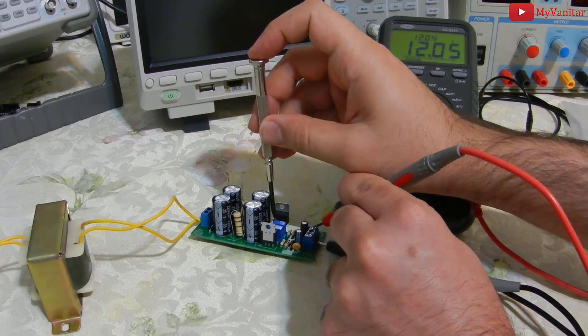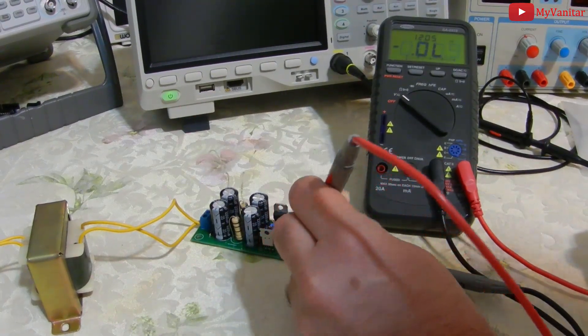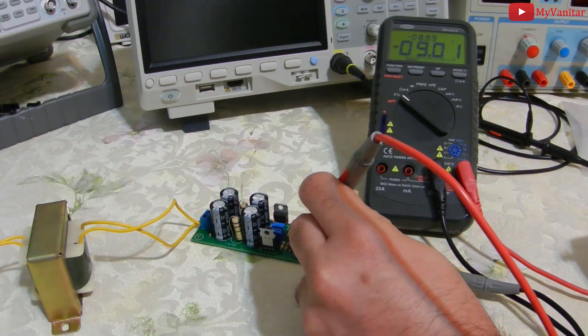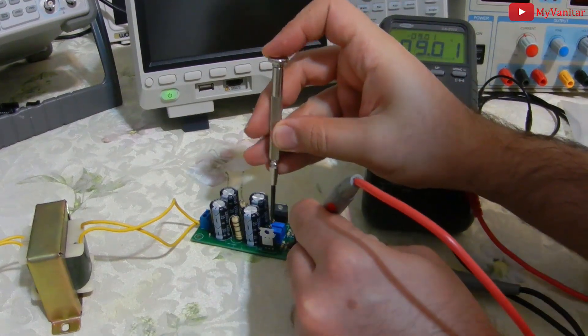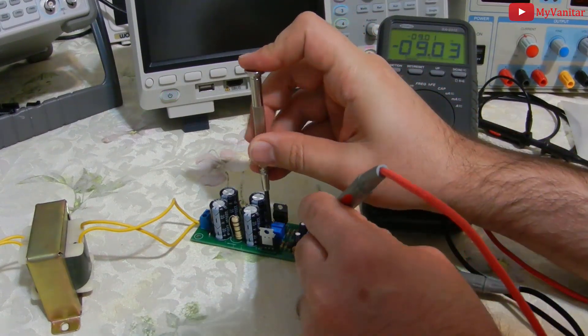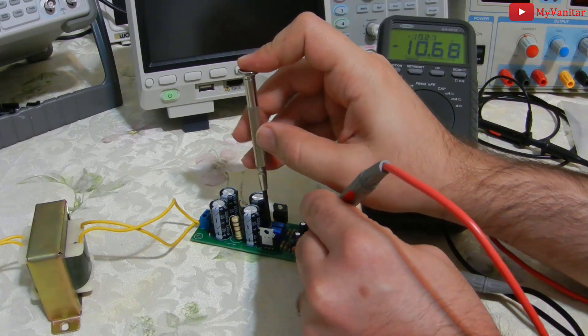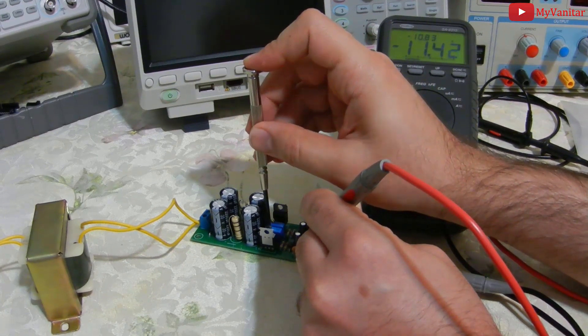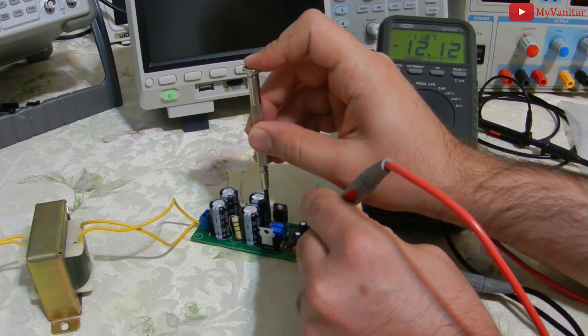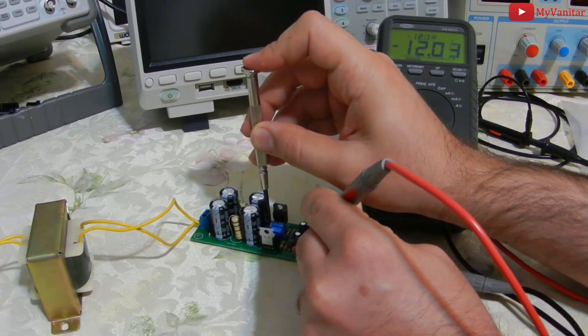And if we adjust the negative rail, I turn this potentiometer and it goes to minus 10, 11, and minus 12 volts.